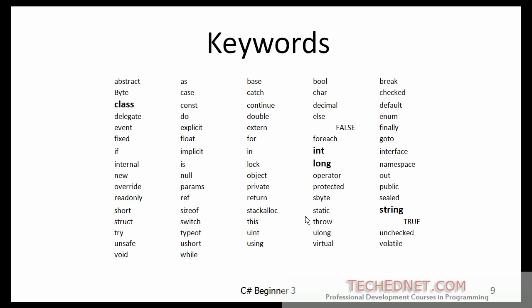Here is a list of keywords in C-Sharp. We already looked at some of them. We came across some of them. Class, int, long, string, etc.